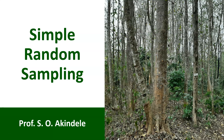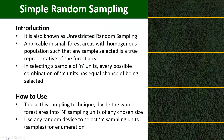So what is simple random sampling? It is also called unrestricted random sampling because it involves sampling with complete randomization — that is, without any restriction.